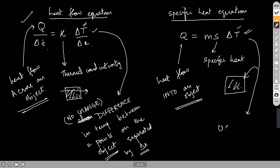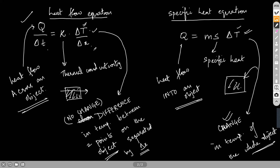In the specific heat equation, ΔT is a change — the change in temperature of the whole object, which is at a single temperature. So ΔT/Δx is the temperature difference between two points separated by Δx — a change with position, which we call a gradient. And ΔT/Δt is a change with time, which we call a rate.